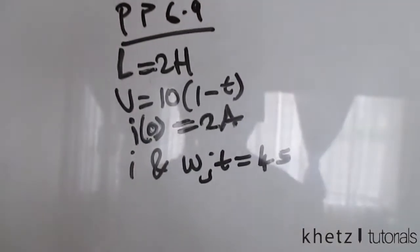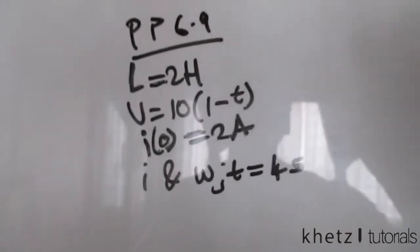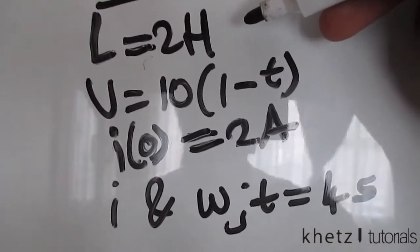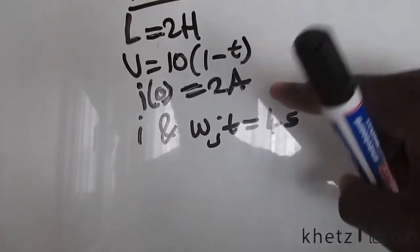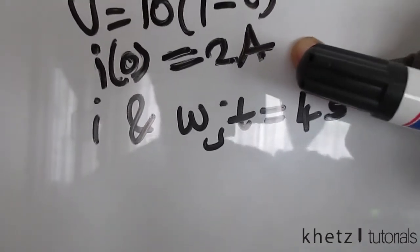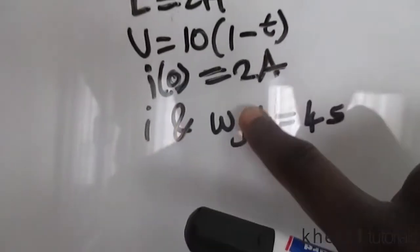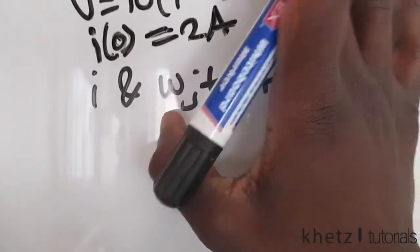Welcome to Khetz Tutorials, and in this video I'll be covering practice problem 6.9. We are given inductance of L equals 2 henrys and this formula for its voltage, as well as an initial current which is stored in it of 2 amperes. And we are asked to find the current as well as the energy stored in it at time equals to 4 seconds.